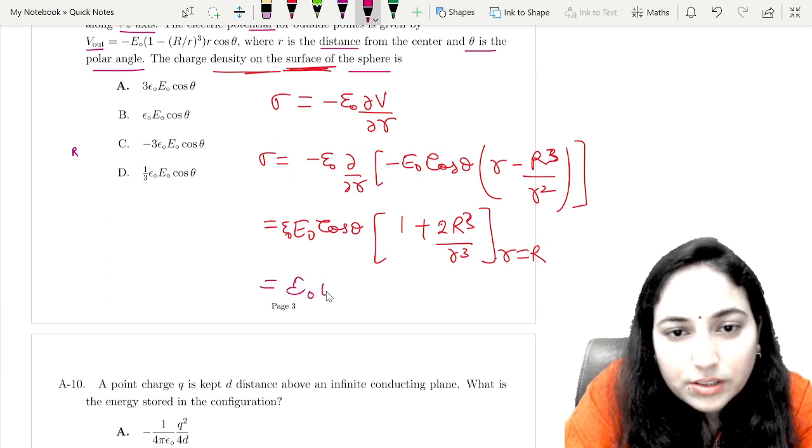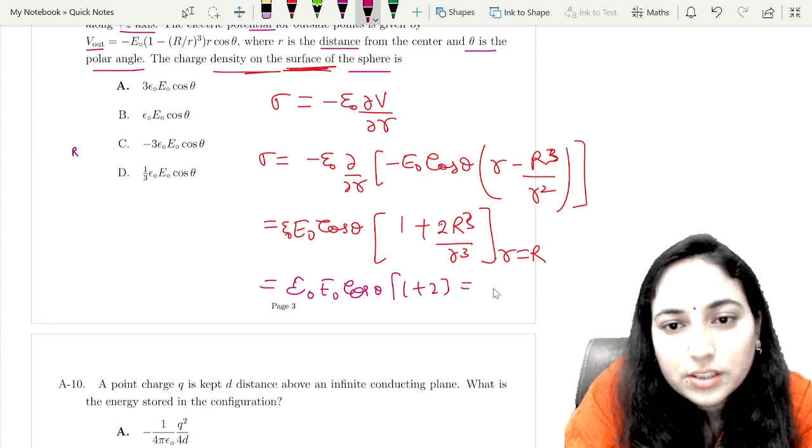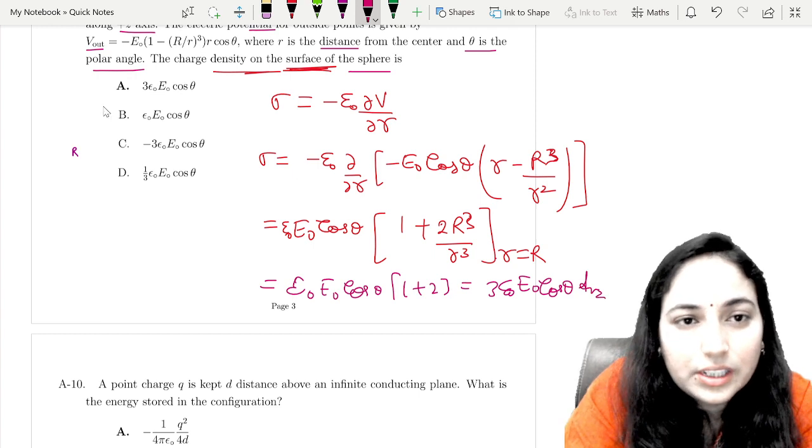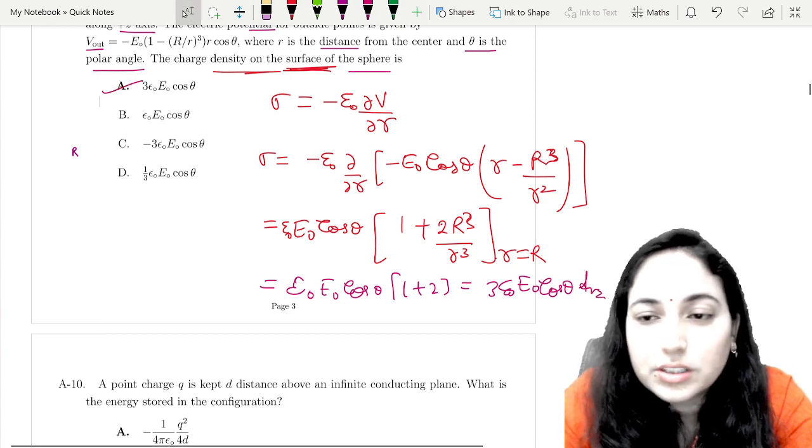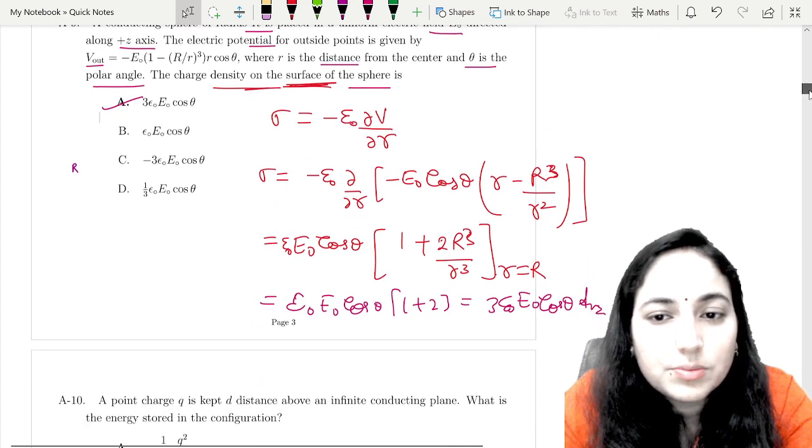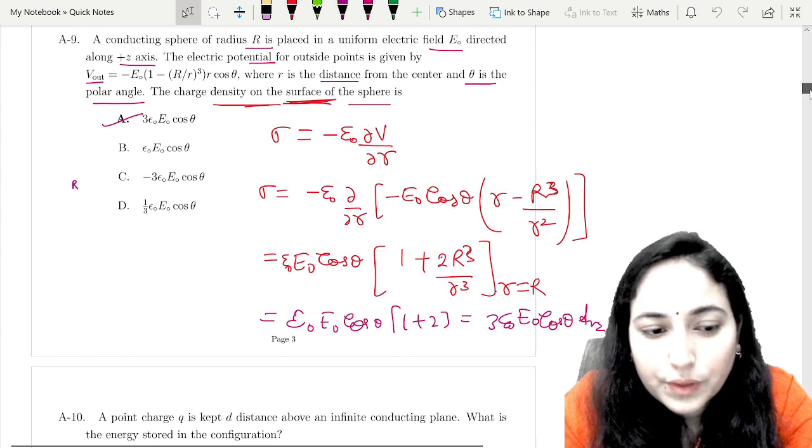Epsilon₀ E₀ cos theta at r equals R. Put this: 1 plus 2 equals 3, so 3 epsilon₀ E₀ cos theta will be the answer. That is the charge density on the surface of the sphere.